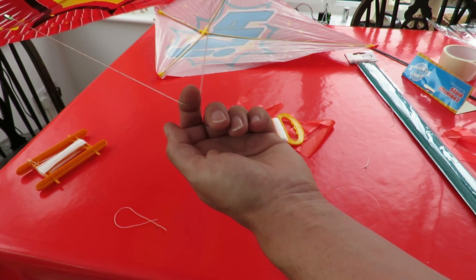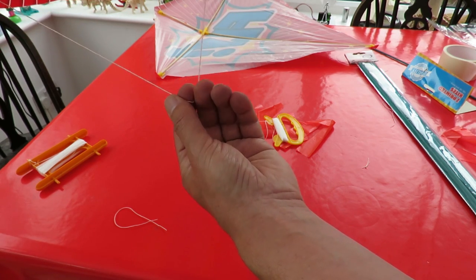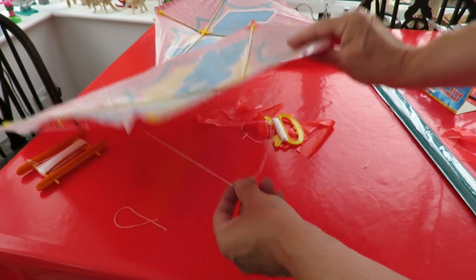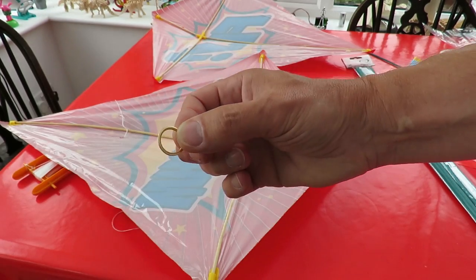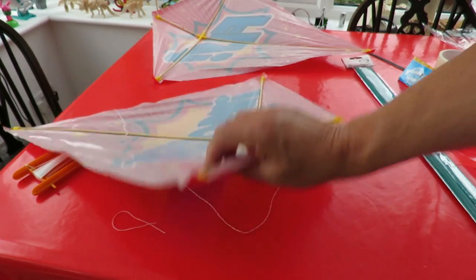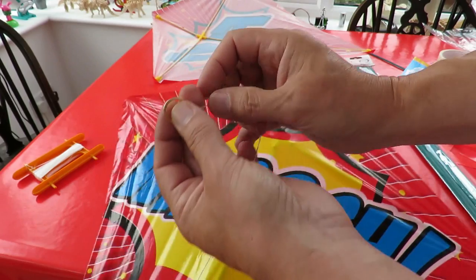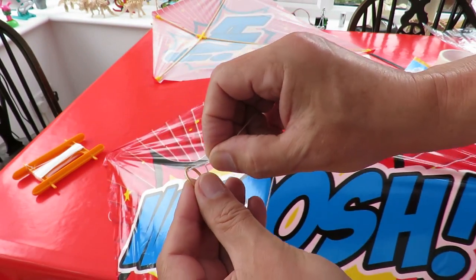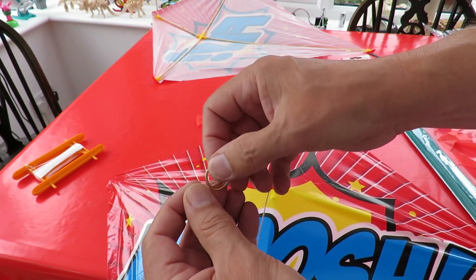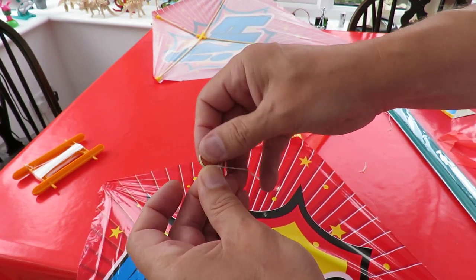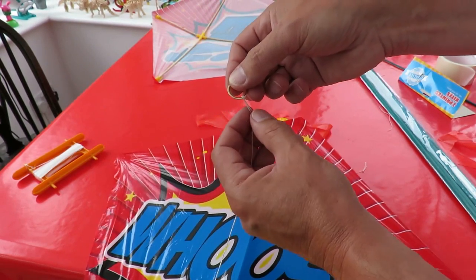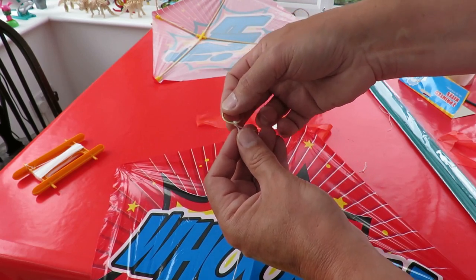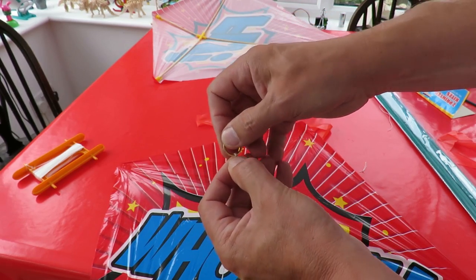And one way of doing that is to put something on here, a loop or a ring that you can then adjust. I've got some curtain rings, little brass curtain rings, well they're probably not real brass nowadays. But if we push that through and then back over like that, that's going to hold itself in place, but you can actually push it to release it and then adjust the position.